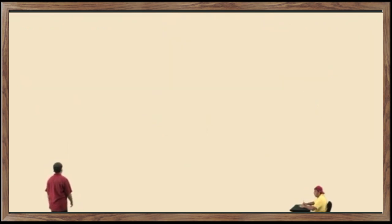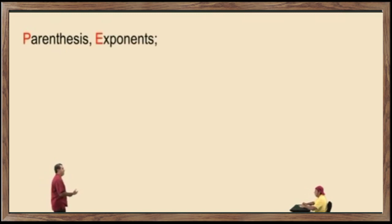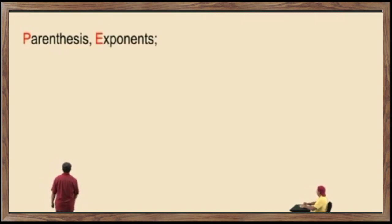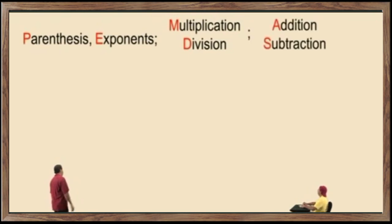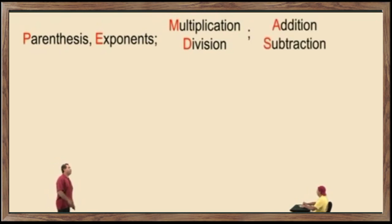Okay, so our order of operations — our four categories: parentheses and other grouping symbols first; exponents second; multiplication and division, working left to right, whichever comes first; and addition and subtraction, working left to right, whichever comes first. That's your order of operations.